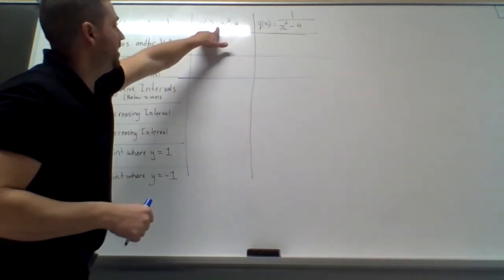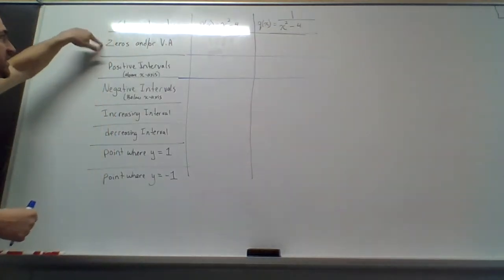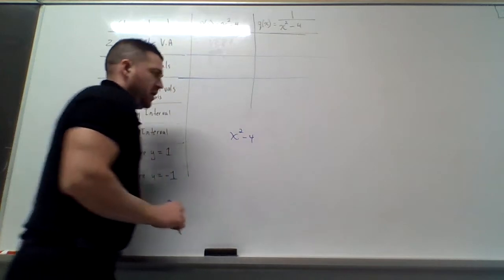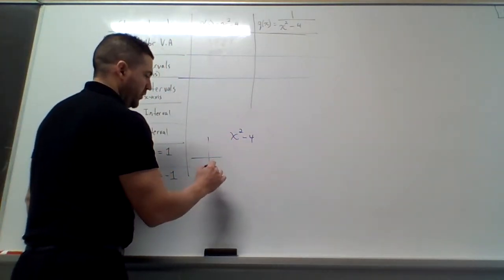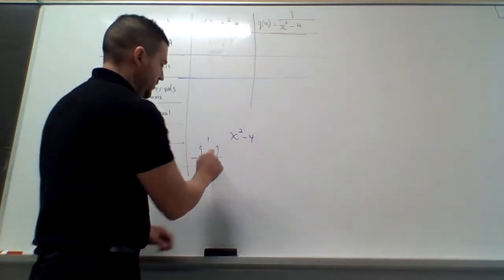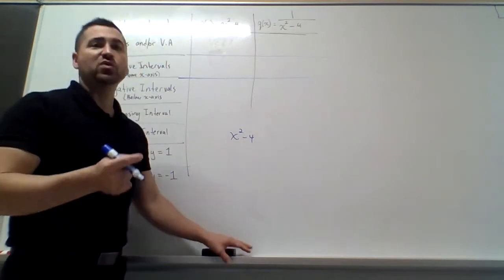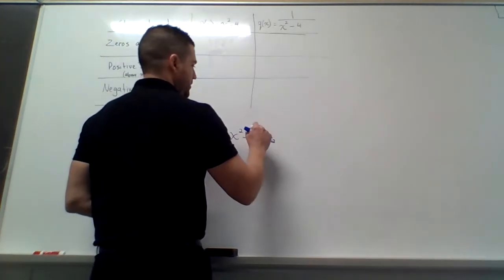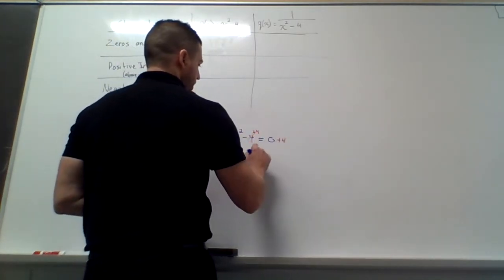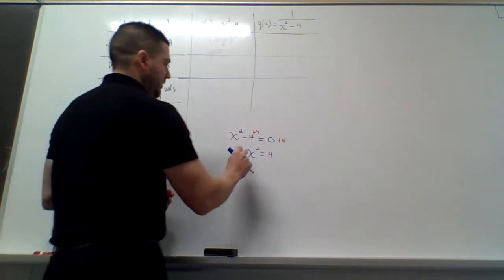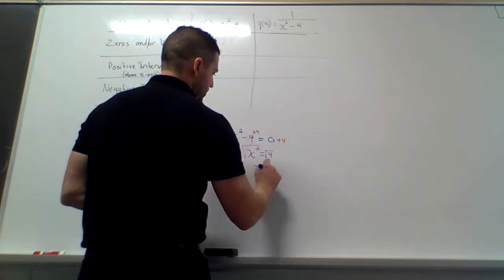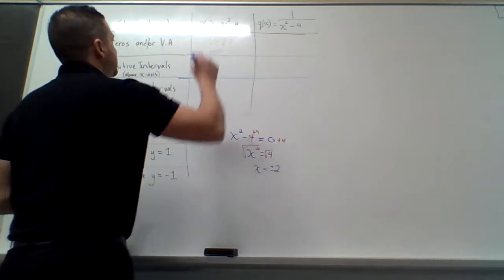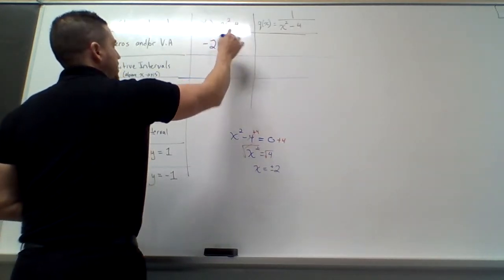First, we're going to look at x squared minus 4. The first part asks: are there any zeros, and/or vertical asymptotes? So we have x squared minus 4. That is a quadratic that moved down 4 units. To find the x-intercepts, the y value is 0, so we set this equal to 0 and isolate for x squared — plus 4. So x squared equals 4, and then we square root it, giving us x equals plus or minus 2. So our zeros are at negative 2 and positive 2.